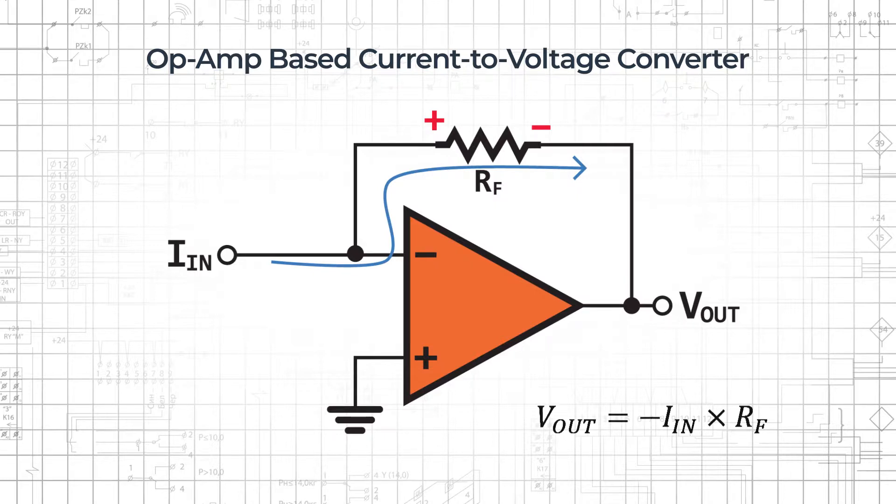Now all we need is Ohm's law to tell us that the magnitude of the output voltage is equal to the input current times the feedback resistance, or Vout equals negative Iin times RF.